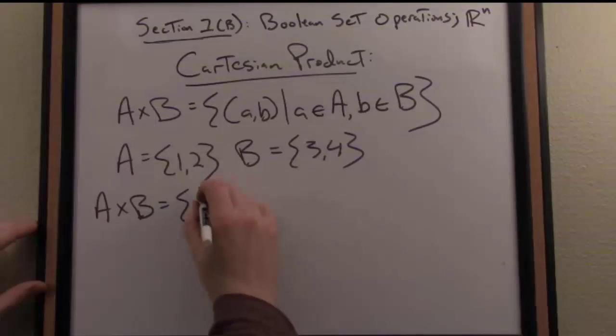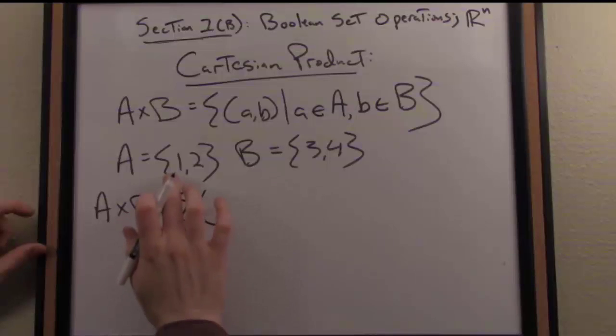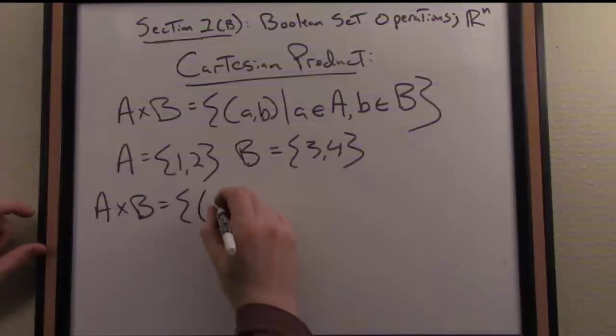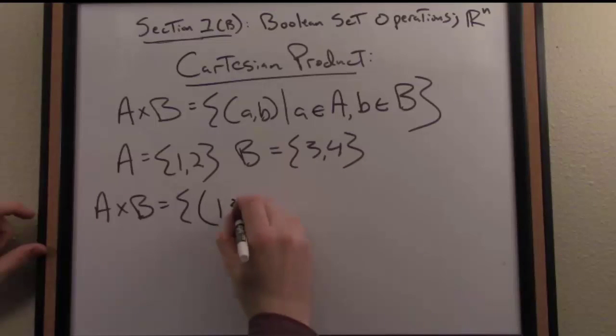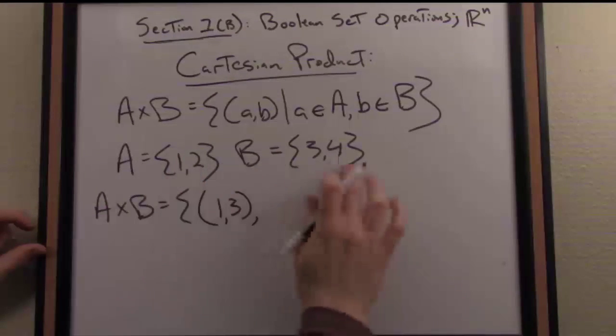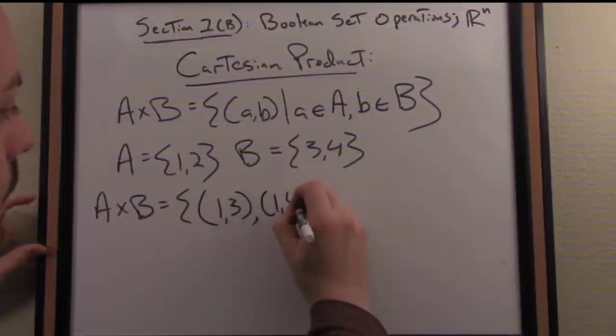Well, again, I pair up. Let's start with the element one here from A. I pair up one with each element in B. So one comma three is one element in this Cartesian product and similarly one comma four is an element in this product.